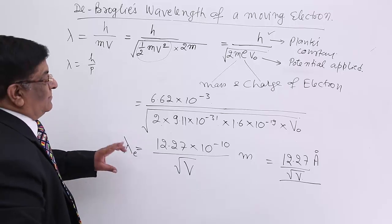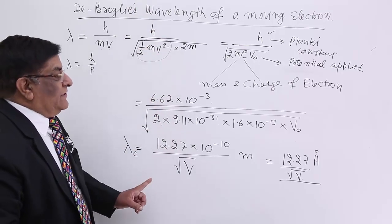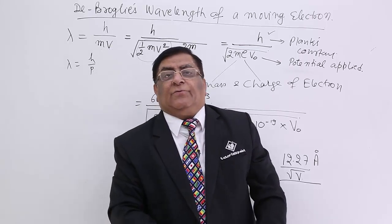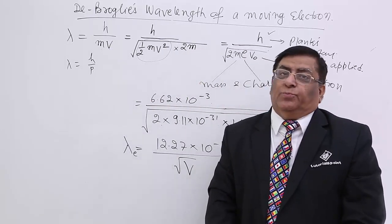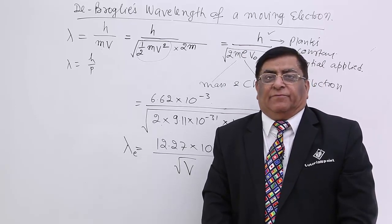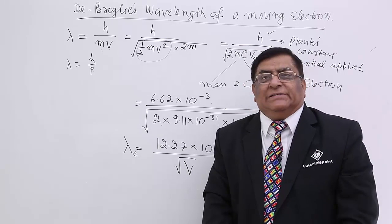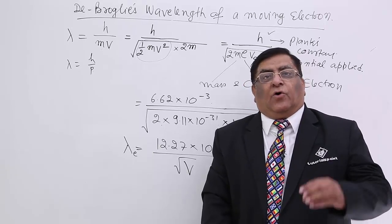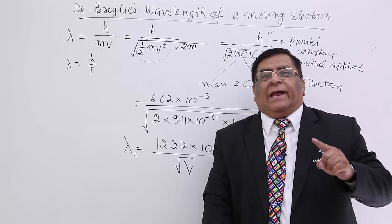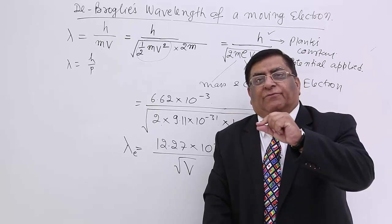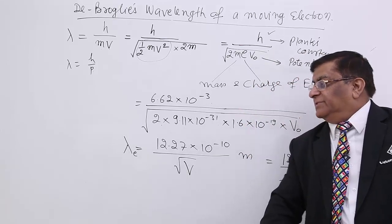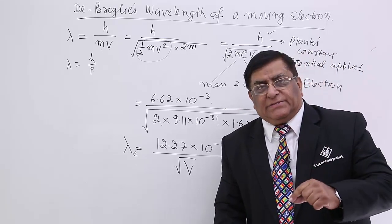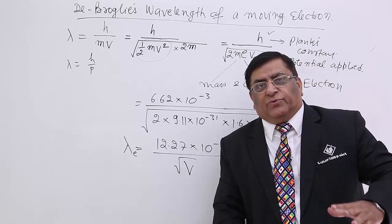Please remember, this is a very important derivation, but this was done theoretically by de Broglie. There was no proof during de Broglie's time. All these things—that matter has a wave, electrons move in waves, and if electrons move in waves they have a particular wavelength—this everything was on paper, in theory, not proven.